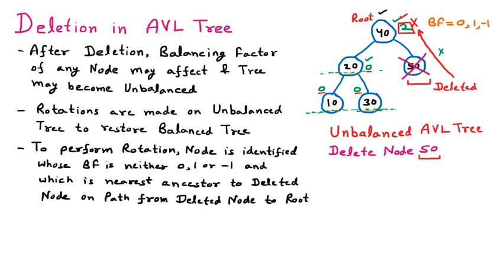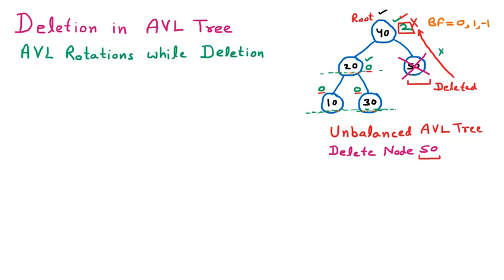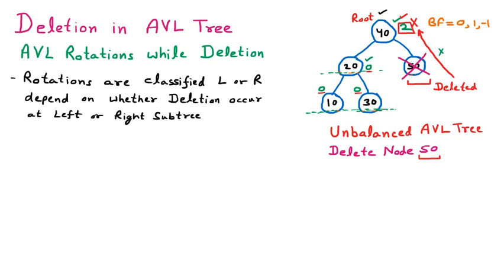Now we are discussing AVL rotations while deletion. Whenever we delete an element from the AVL tree and the tree becomes unbalanced, rotations are applied. The rotations are classified as L or R depending on whether deletion occurs at the left or right subtree. If deletion is performed on the left subtree, L rotation is applied. If deletion is on the right subtree, R rotation is applied.